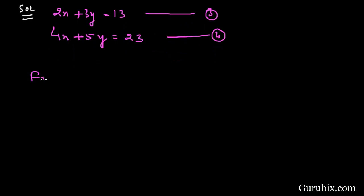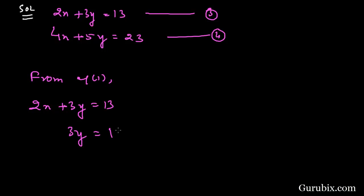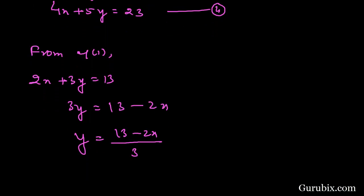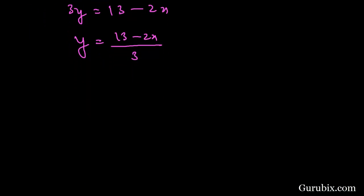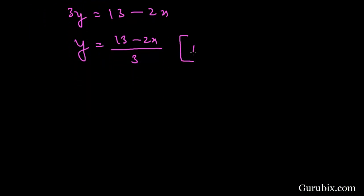Now we shall start from equation number 3. We have 2x + 3y = 13, which means 3y = 13 − 2x, and therefore y = (13 − 2x) / 3. We shall now substitute this value of y into equation number 4.